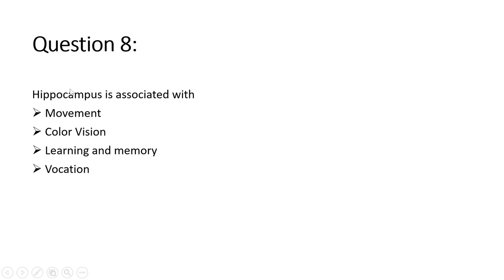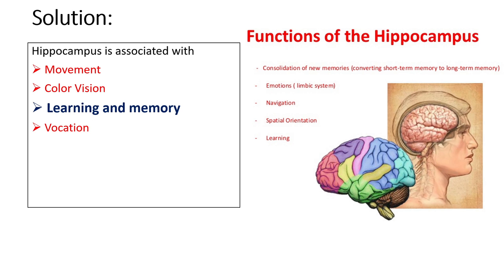Question eight: the hippocampus is associated with — (a) movement, (b) color vision, (c) learning and memory, or (d) vocation. Although not directly from this week's lecture, it was included in the previous session's assignment. The right answer is (c) learning and memory. The hippocampus is associated with consolidation of new memory, converting short-term to long-term memory, emotions, navigation, spatial orientation, and learning.